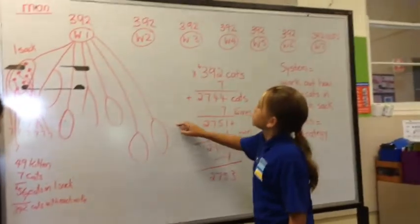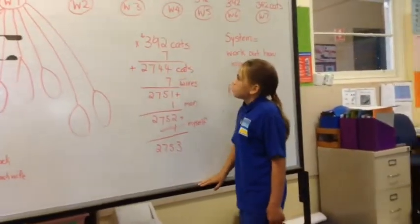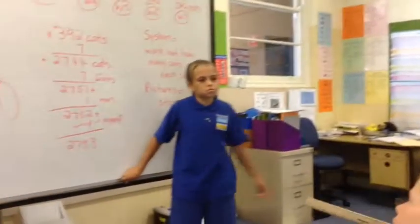So we got our answer, 392, but then we said, oh wait, we have to times it by seven. Because there were seven wives? Because there were seven wives, yeah, times it by seven.